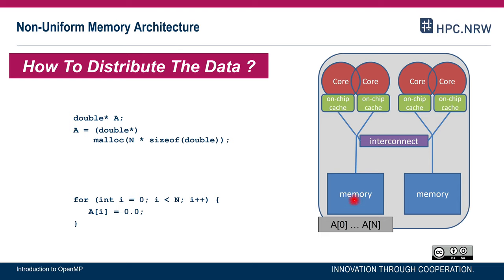These physical memory partitions are what we call NUMA nodes — non-uniform memory access nodes. If a thread is running on a core and accesses data located in the same NUMA node, memory bandwidth is higher and latency is lower than if the thread had to access data via the interconnect on a remote NUMA node.